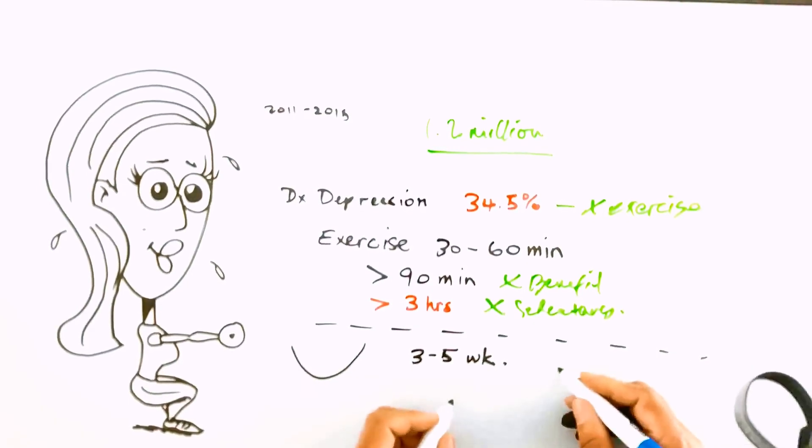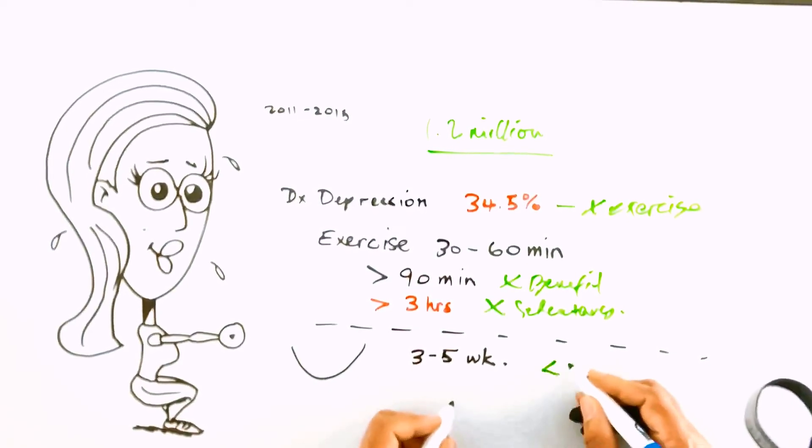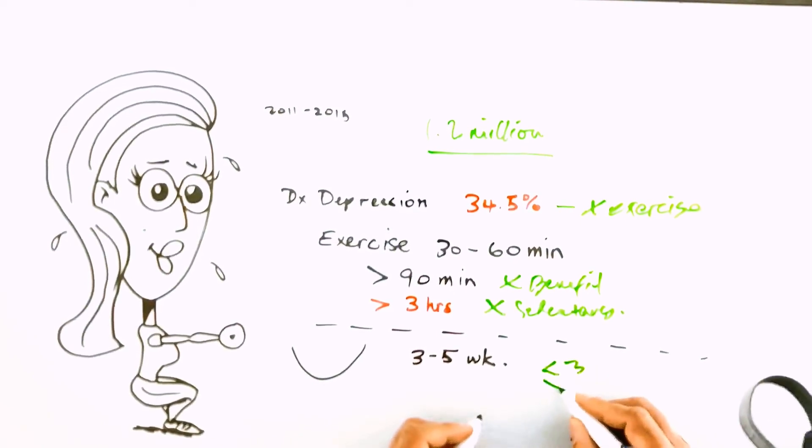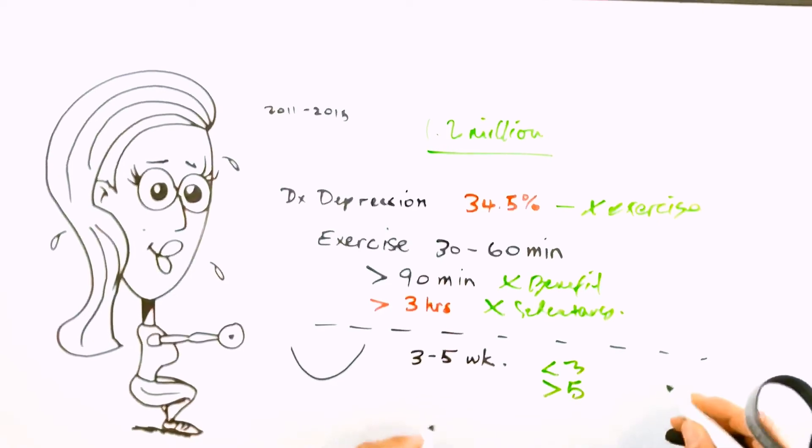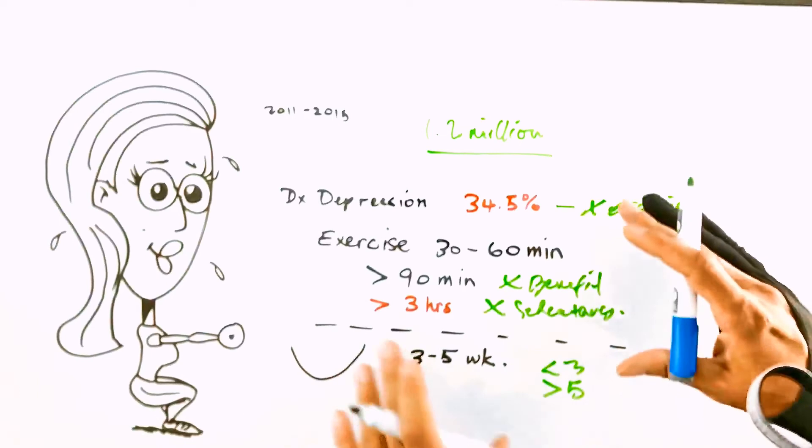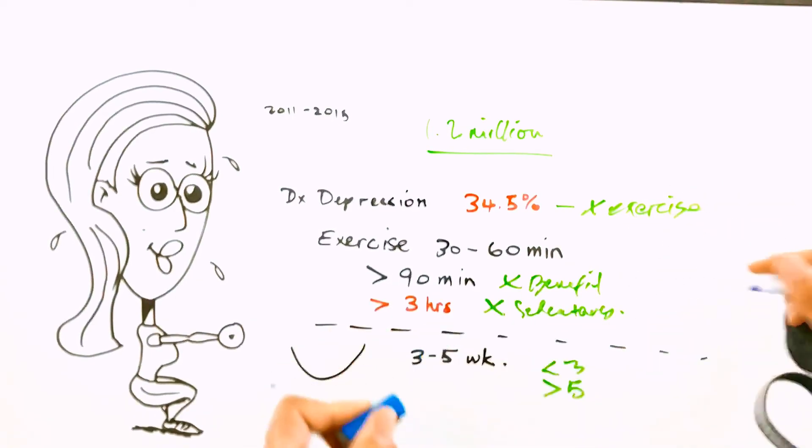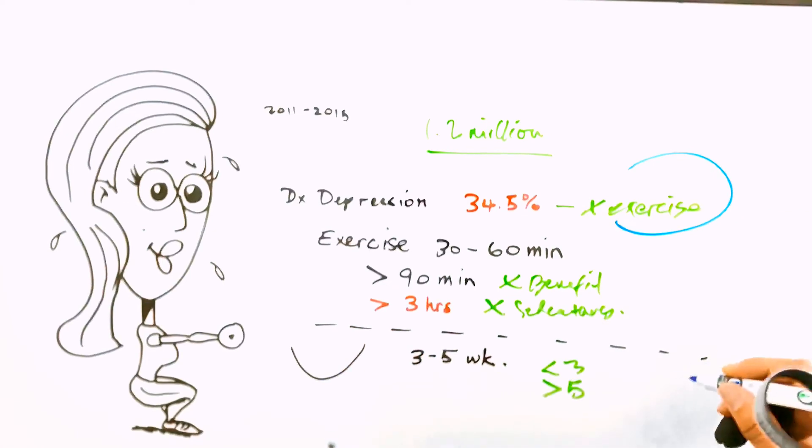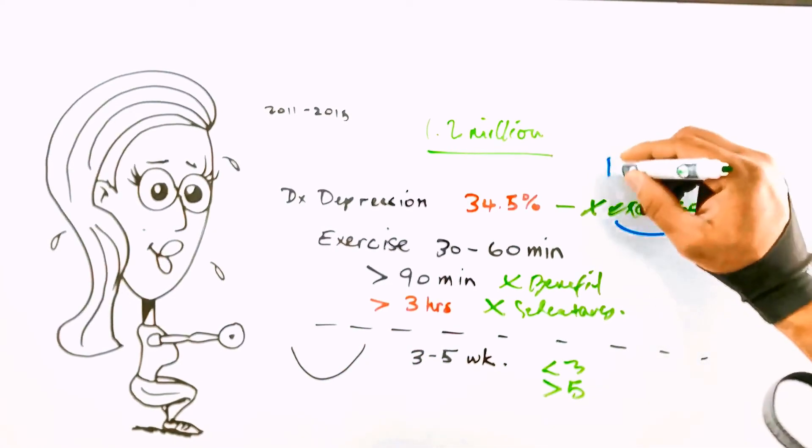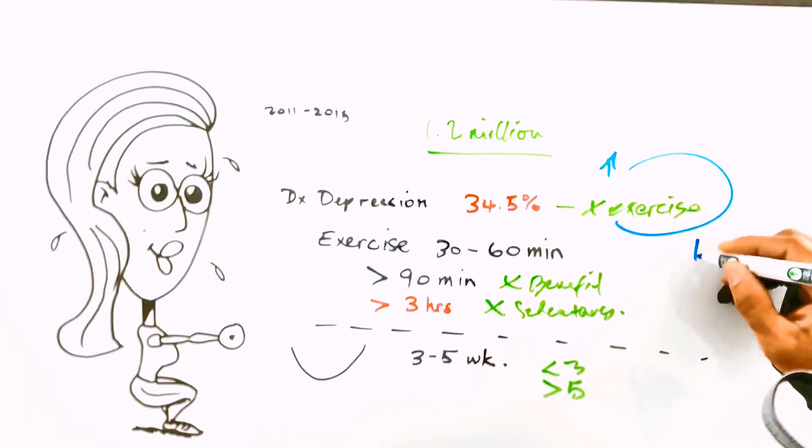That was superior to exercising less than three times a week, and it was also superior to exercising more than five times a week. So again, your porridge needs to be just the right temperature, not too hot, not too cold. So too little exercise is detrimental to mental health, but so is too much exercise.